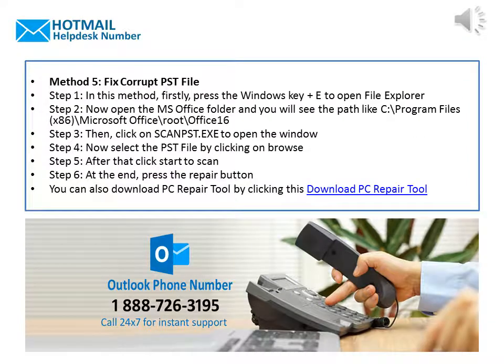Method 5: Fix Corrupt PST File. Step 1: In this method, firstly press the Windows key plus E to open File Explorer. Step 2: Now open the MS Office folder and you will see the path like C:\Program Files (x86)\Microsoft Office\root\Office16. Step 3: Then click on Scanpst.exe to open the window. Step 4: Now select the PST file by clicking on Browse. Step 5: After that, click Start to Scan. Step 6: At the end, press the Repair button.